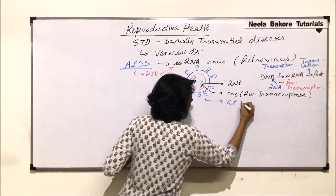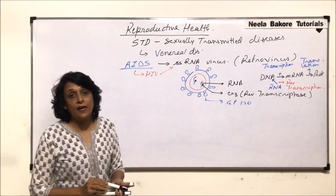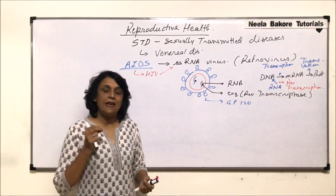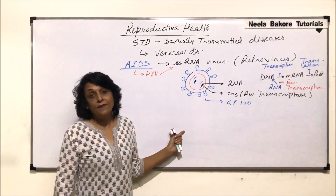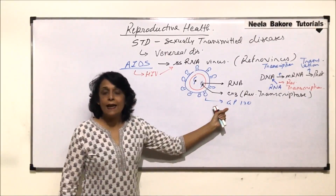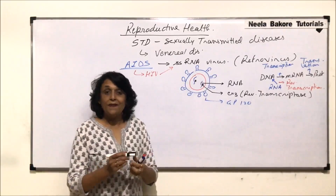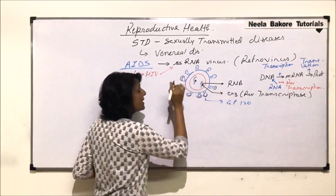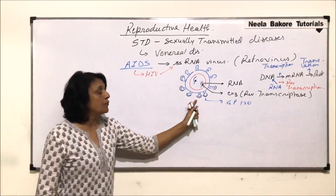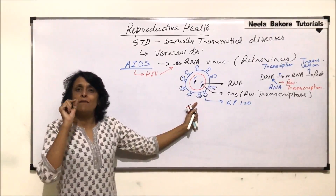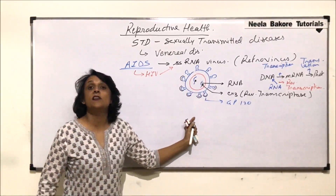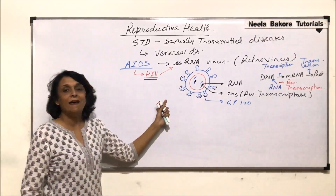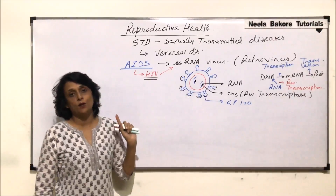This GP120 is antigenic — it acts as an antigen. We know that if our body receives any antigen, it produces antibodies. So the question arises: if GP120 is acting as an antigen, why is our body not able to produce antibodies? The reason is that GP120 remains masked — it is covered by a non-antigenic layer. This antigen gets exposed only for a very short period of time when the virus infects the host cell. So this HIV, which is a retrovirus, has RNA as genetic material plus the reverse transcriptase.